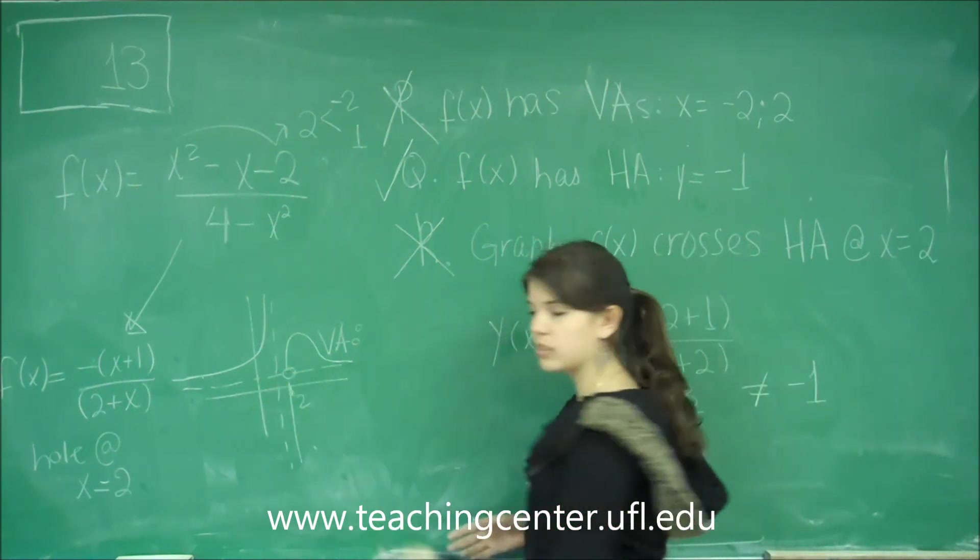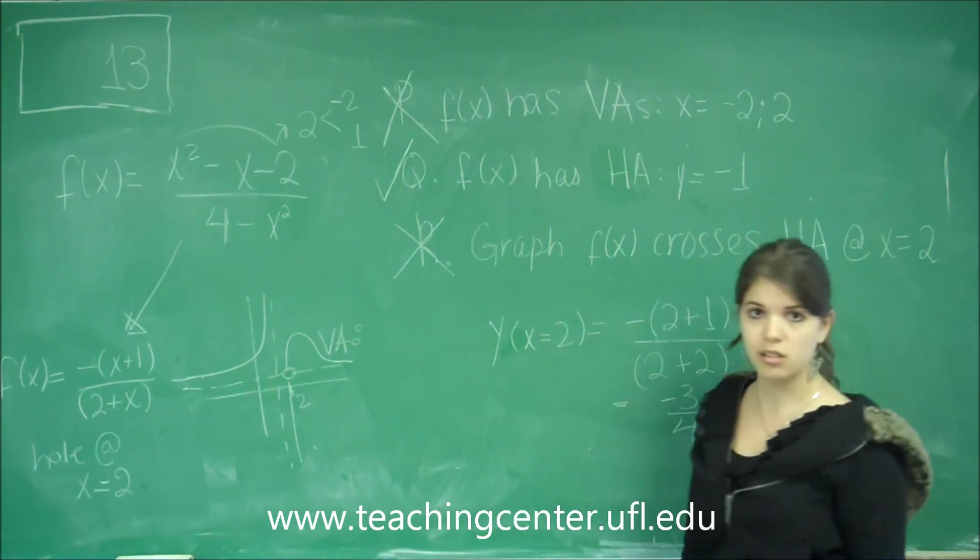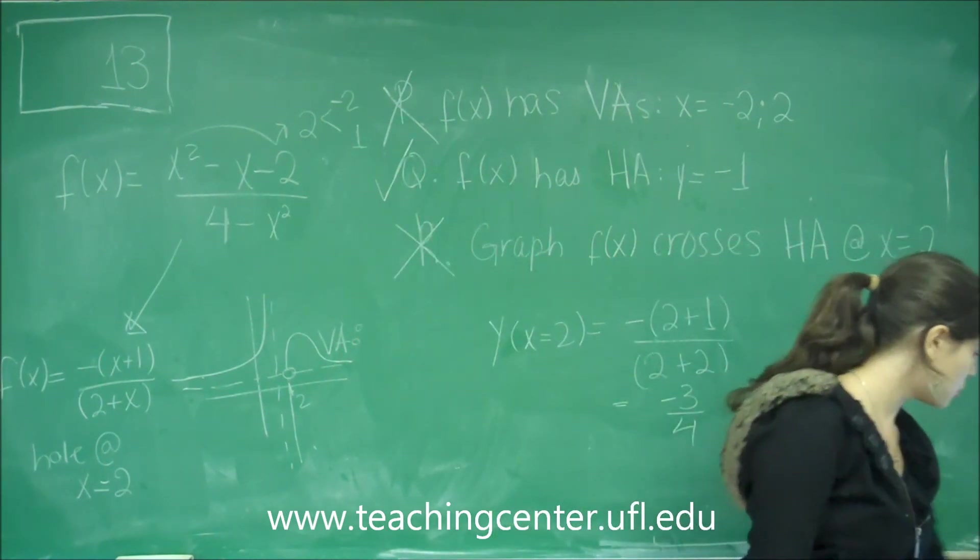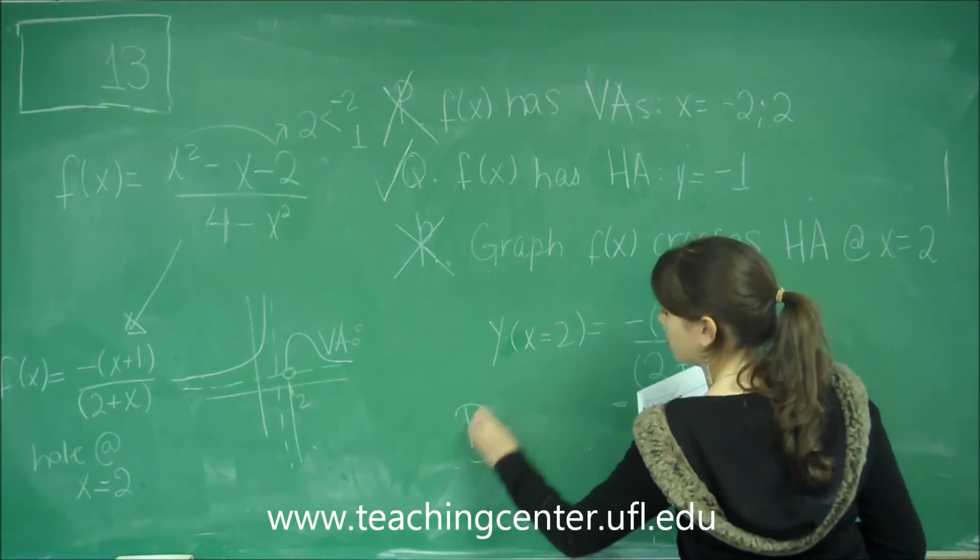So it's not crossing at that point. Even if it was a hole, it's not crossing at that point. So that's incorrect. And the only correct choice is Q, which would be answer choice B.